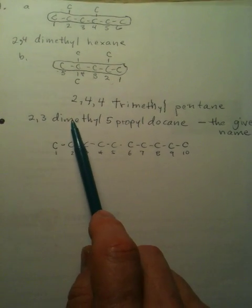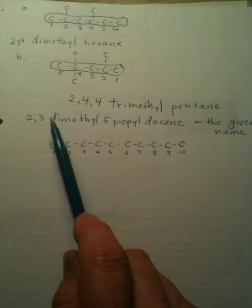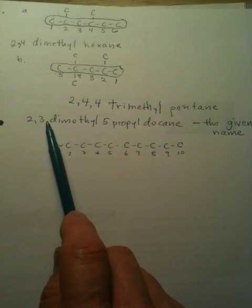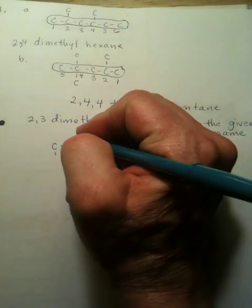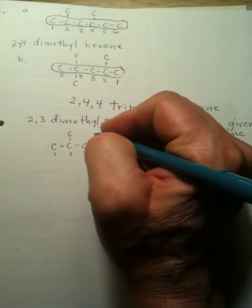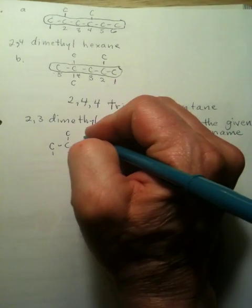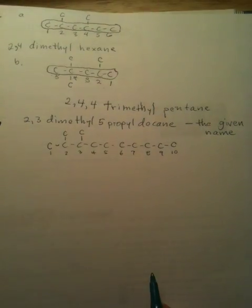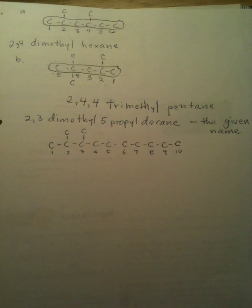So, this tells me I've got methyls, which is one carbon only, on number two and three. So, all I have to do is draw one carbon on two, and another carbon on three. And that takes care of my two methyl substituents.